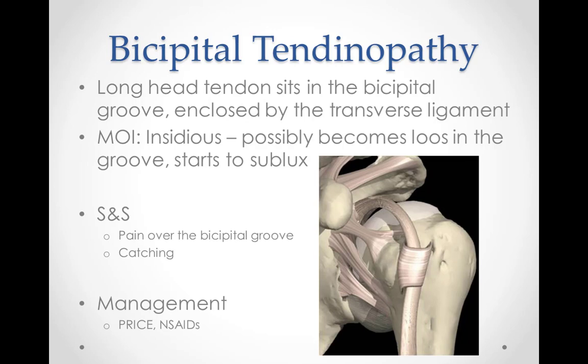Overhead activities usually reproduce pain, especially in positions combining abduction and external rotation, such as cocking to throw. The pain is often aggravated by shoulder flexion, forearm supination, or elbow flexion. Some patients describe muscle weakness and clicking or snapping with shoulder movements. The symptoms are typically alleviated by rest and ice.